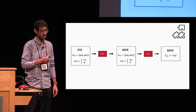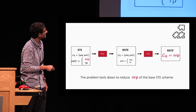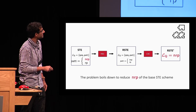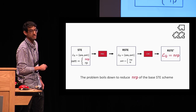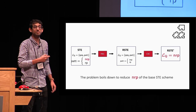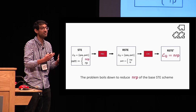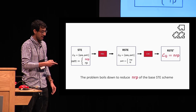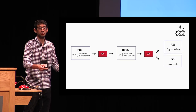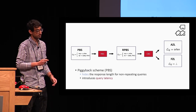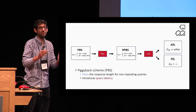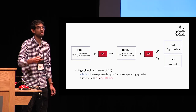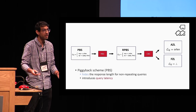Notice that the leakage profile of our final construction in the pipeline equals only the non-repeating pattern, which equals the non-repeating pattern of the first construction we put in the pipeline. This means that if we want to achieve a construction with a very small leakage profile, it is sufficient to reduce the non-repeating pattern of the base construction. Based on this observation, we designed a new construction called the piggybback scheme, or PBS for short, which is the first construction that hides the response length.